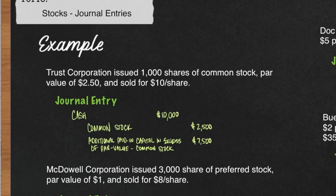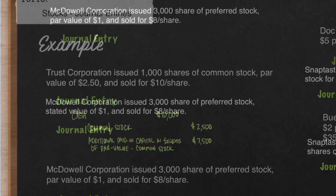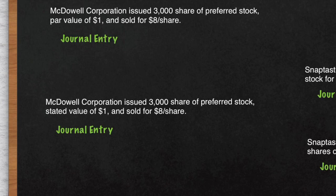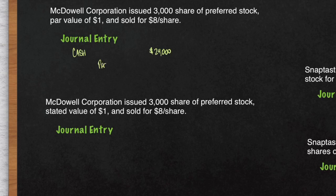Let's go to our next example. McDowell Corporation issued 3,000 shares of preferred stock with a par value of $1 and it sold for $8 per share. You want to debit cash for $24,000 — that's the $8 per share times the 3,000 shares of preferred stock. Now instead of crediting common stock like the previous example, this is specific: this is for preferred stock. So you must credit preferred stock for $3,000, which is the par value of $1 times 3,000 shares.